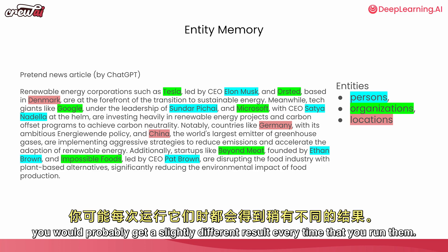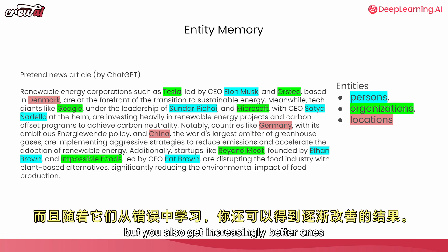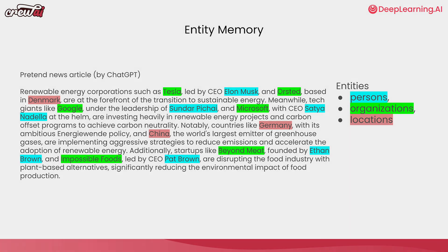If your agents didn't have memory, you would probably get slightly different results every time you run them. But because they do, you not only get more reliable results, but also increasingly better ones — because they learned from their mistakes.